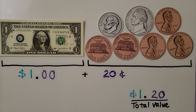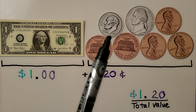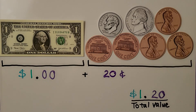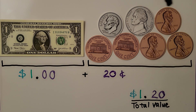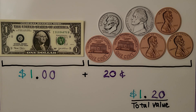Here's a different way to show $1.20. We have a dollar bill — that's one dollar. And we have a dime, that's 10 cents. And we have a nickel, that's 5 cents. So that's 15 cents, then 16, 17, 18, 19, 20 cents. The total value is a dollar and 20 cents.